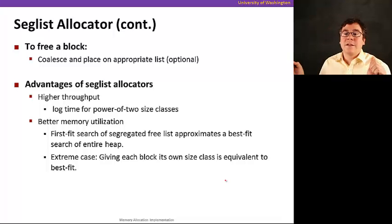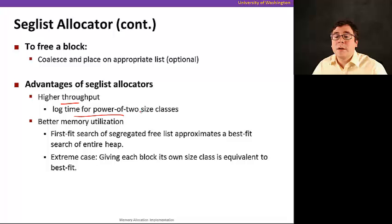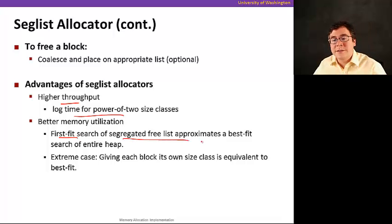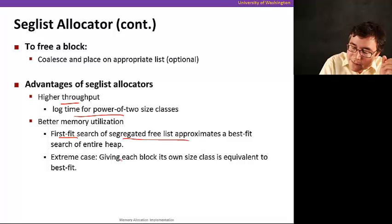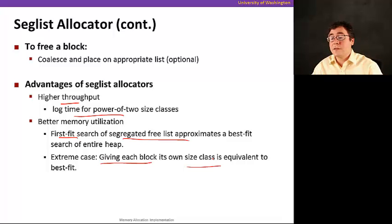The advantage of segregated list allocators is higher throughput — we have logarithmic time for power-of-two size classes to find the appropriate one. It also has better memory utilization because a first-fit search on the segregated free list approximates a best-fit search of the entire heap. In the extreme case, if you give each block its own size class, that's equivalent to best fit.